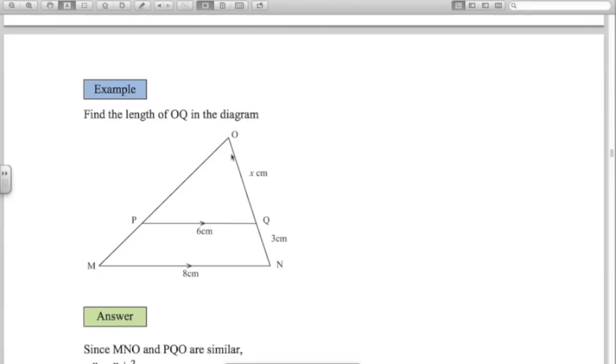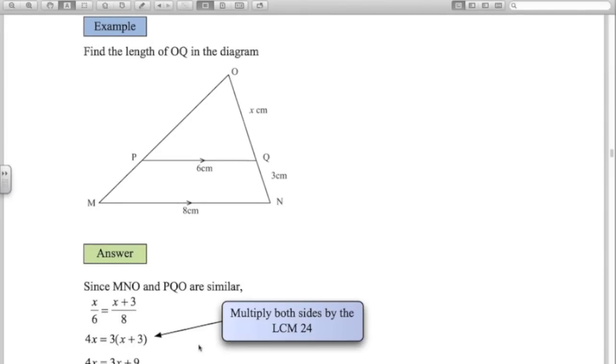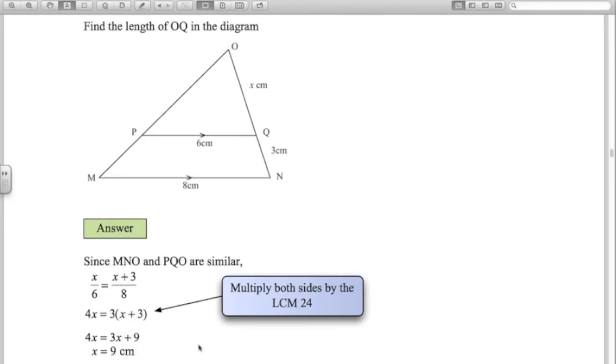So let's look at this example. In these triangles, triangle ONM, the bigger one, is similar to OQP, that smaller triangle. Similar means they have the same shape. So what does that mean? That means that X divided by 6, that ratio, that length to that length, is the same as the ratio X plus 3 divided by 8. Multiply both sides by 24 gives me the next step to get rid of the fractions. Expand out the brackets, subtract 3X and it gives me X equals 9 centimeters. So there's your basic revision on the things that you have to know for trigonometry to get started here.